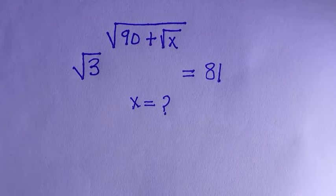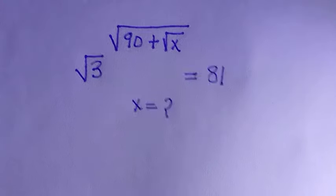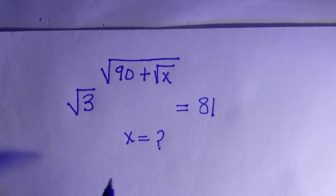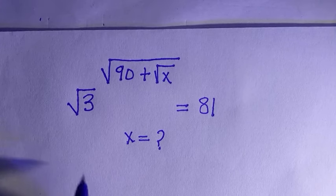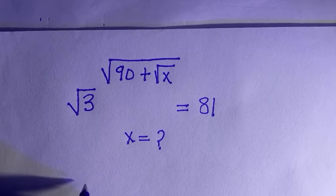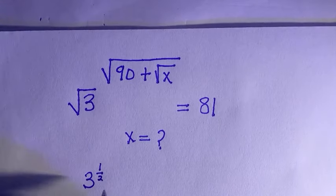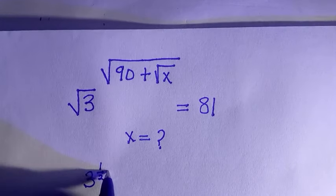Welcome to another video. Let's find x in this problem, and we must know that x is a member of the real numbers. What to do first is by reforming the root as 1 divided by 2, then multiplying the root of 90 plus root x.